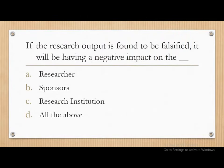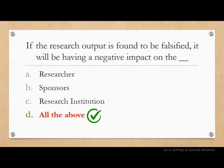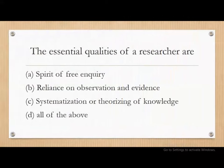Moving on. If the research output is found to be false, it will have a negative impact on — whether it is researchers, sponsors, research institutions, or all of the above. The correct answer is all of the above. If the research output is found to be falsified, it will have a negative impact on researchers, sponsors, as well as research institutions.